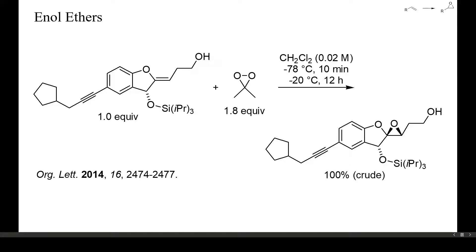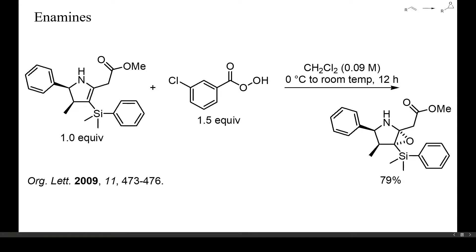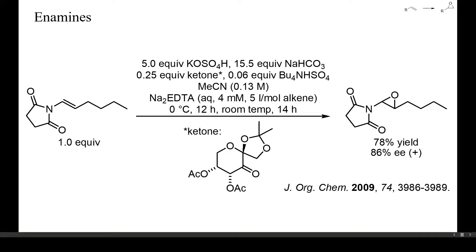As already mentioned, heteroatom-substituted epoxides are quite unstable and readily isomerize or hydrolyze to ketones, as shown here. Therefore, these products are mainly used for the preparation of hydroxy ketones from ketones via intermediate enol ethers. Here, an enol ether was epoxidized by treatment with an excess of dimethyldioxirane at minus 20 degrees Celsius. Alkynes are usually resistant to epoxidation, because the resulting oxirenes would be anti-aromatic and thus very energetic and unstable. This is an example of enantioselective epoxidation of an enol benzoate with hydrogen peroxide and a chiral ketone — both yield and enantioselectivity were good. Here, a highly reactive amino-substituted epoxide was prepared from a pyrroline. An N-alkenyl succinimide was epoxidized enantioselectively with oxone and a chiral ketone.